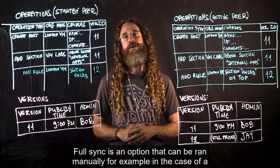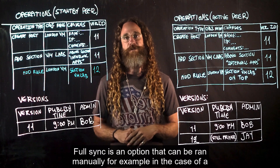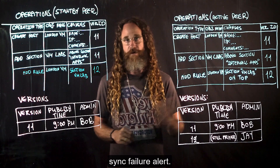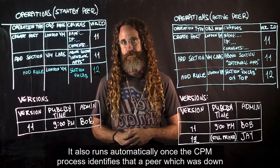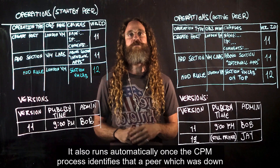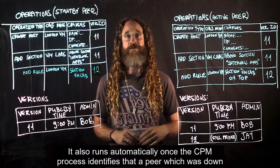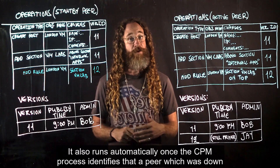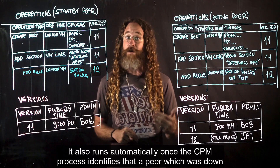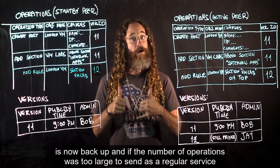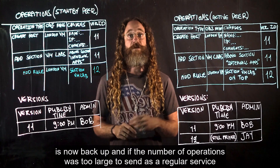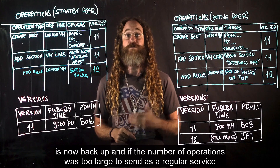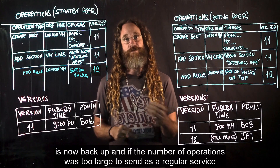Full sync is an option that can be run manually, for example in the case of a sync failure alert. It also runs automatically once the CPM process identifies that a peer which was down is now back up, or if the number of operations was too large to send as a regular service.